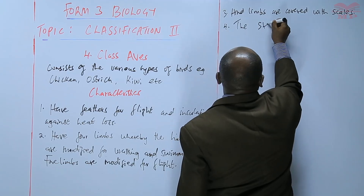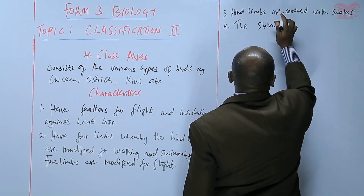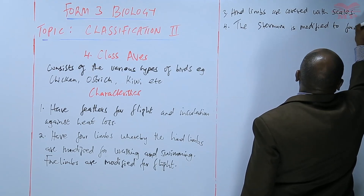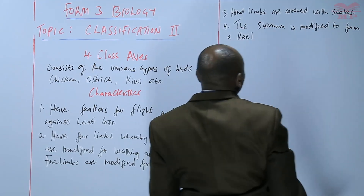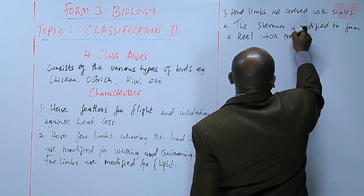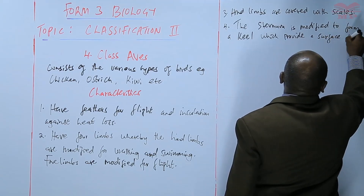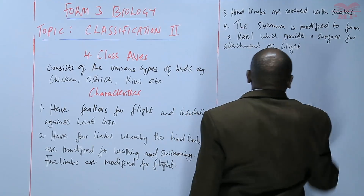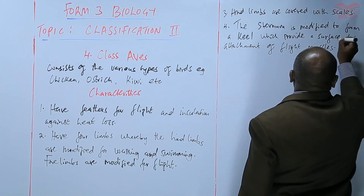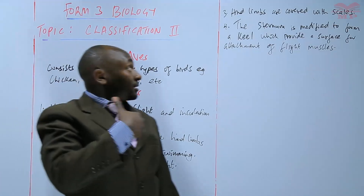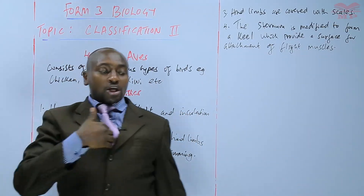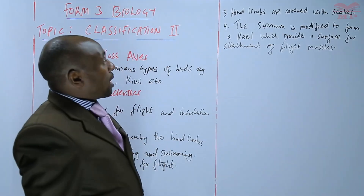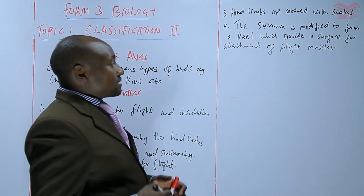The sternum, that is the bone between the ribcage, is modified to form a keel, which provides a surface for the attachment of flight muscles. The sternum is the bone at the center — on either side we have the ribcage — and it is also known as the breast bone. It is modified to form a keel, which provides a surface for the attachment of the flight muscles.